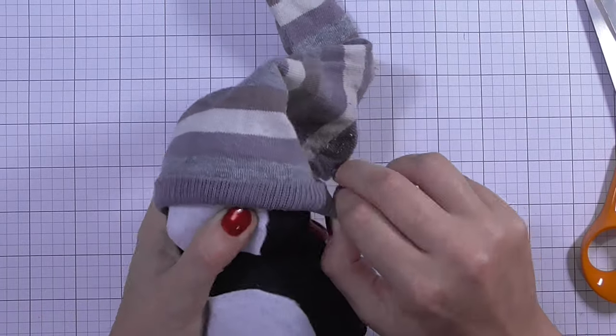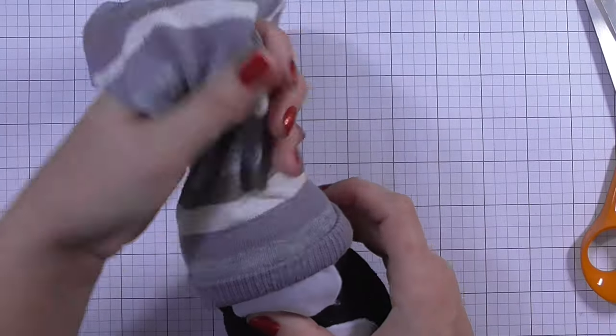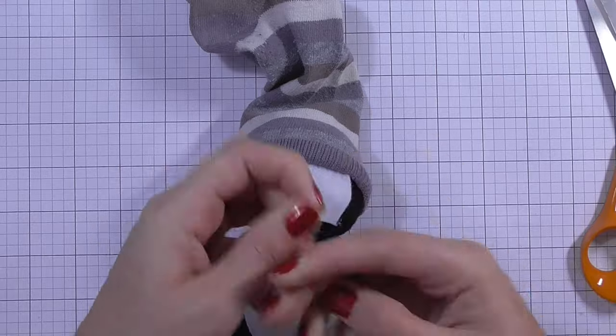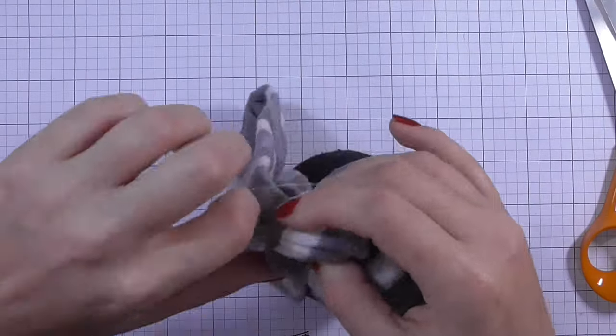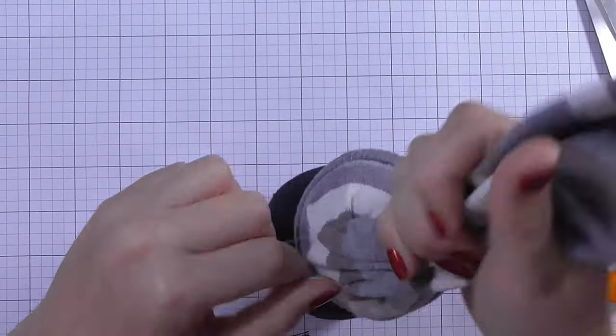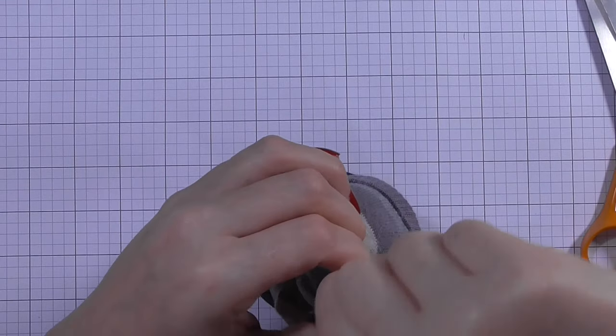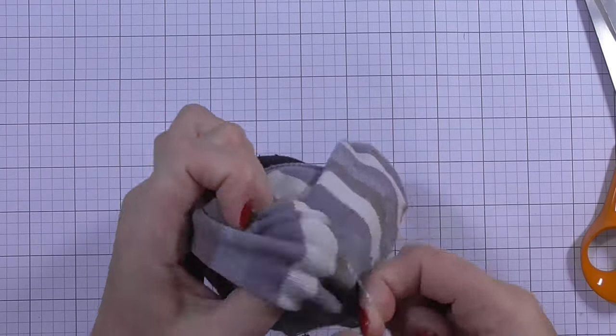Once I've played around with that and got that into place, I'm just going to measure out how high up the sock I want to place the bobble and then I'll tie that off nice and tight again, and then I'll just trim off the excess with my scissors.